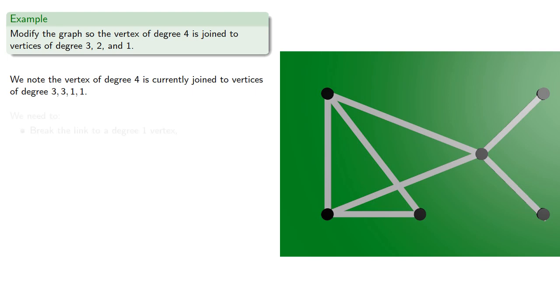So, we need to break the link to a degree 1 vertex and form a link to the degree 2 vertex. Now, the thing to notice is we now have two edges that don't have endpoints.